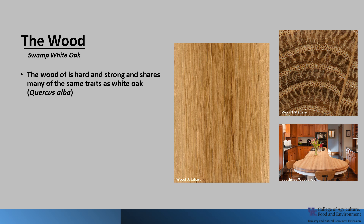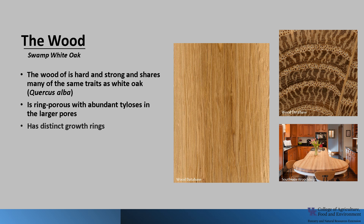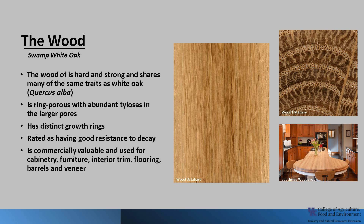The wood of Swamp White Oak is hard and strong and shares many of the same traits as White Oak, Quercus alba. It has medium to large pores. It is ring porous with abundant tyloses in the larger pores. Tyloses are the balloon-like outgrowth of parenchyma cells in the large xylem cells, and they block water movement, which helps White Oak's wood to be watertight. It has distinct growth rings and is rated as having good resistance to decay. It is a commercially valuable wood used for cabinetry, furniture, interior trim, flooring, barrels, and veneer.